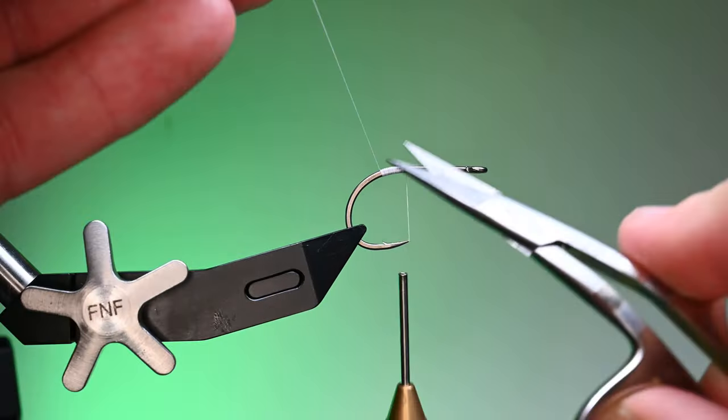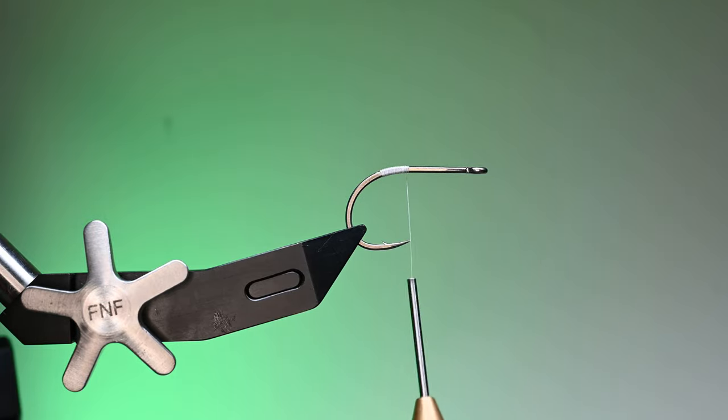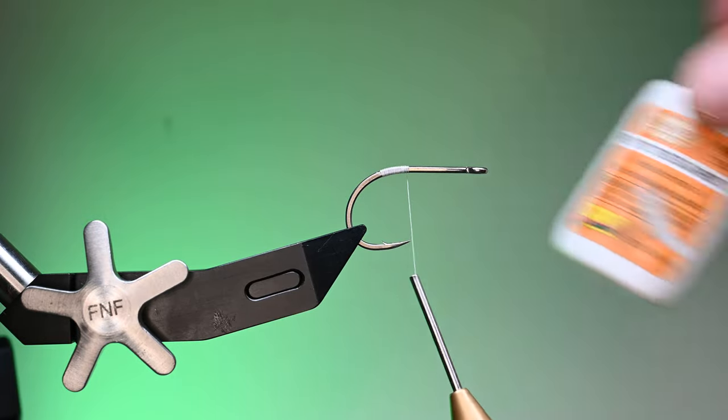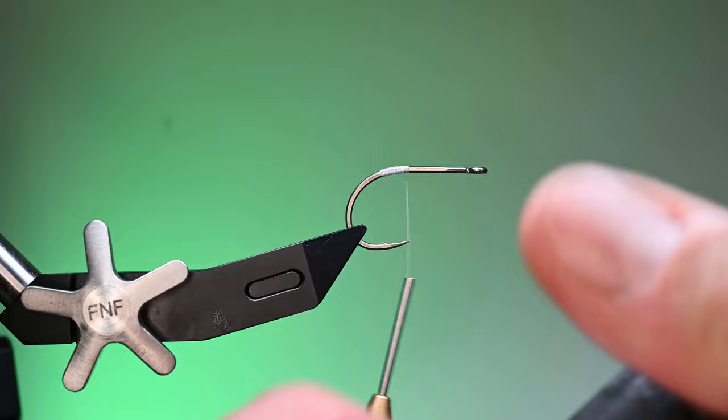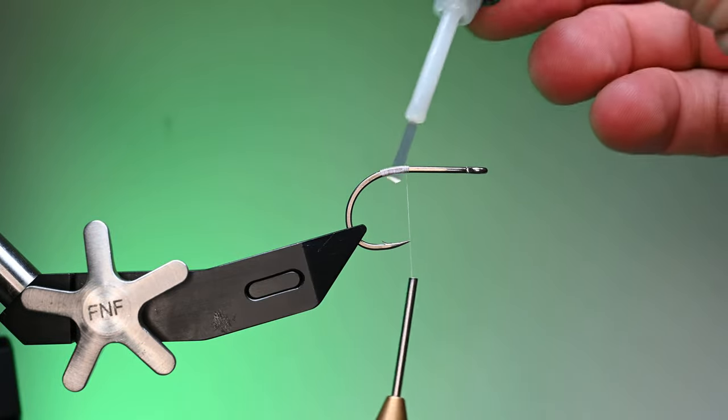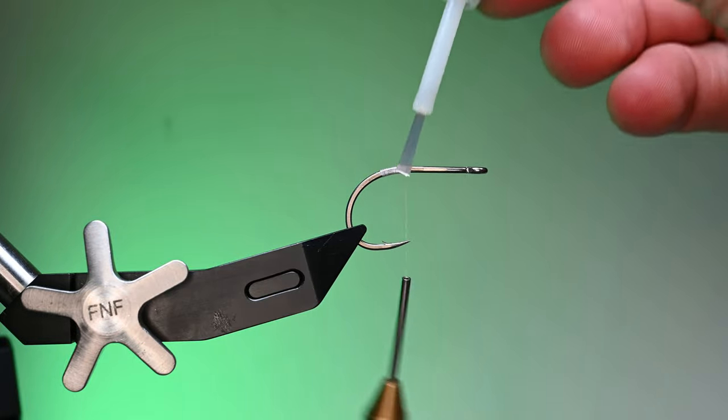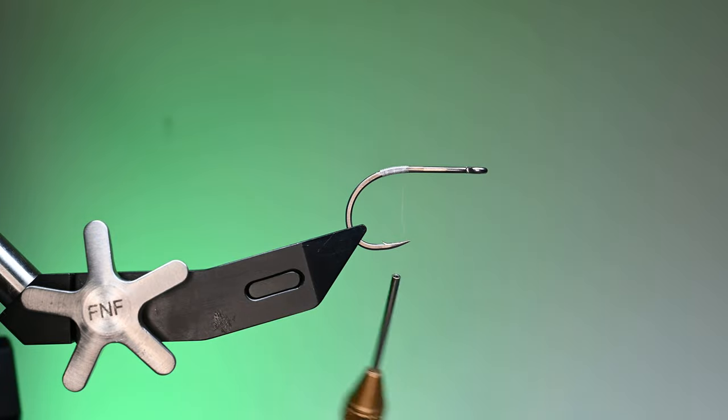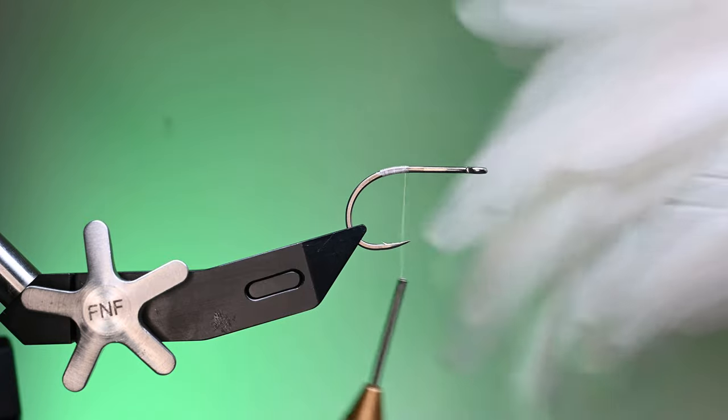This is a very basic fly using minimal materials. Now we're going to be putting in a tail here, so I'm going to put down a little bit of super glue just to bond this thread to the hook shank. Also, by the time I get my feathers prepped it's going to be a little bit tacky that will assist in marrying these feathers together.